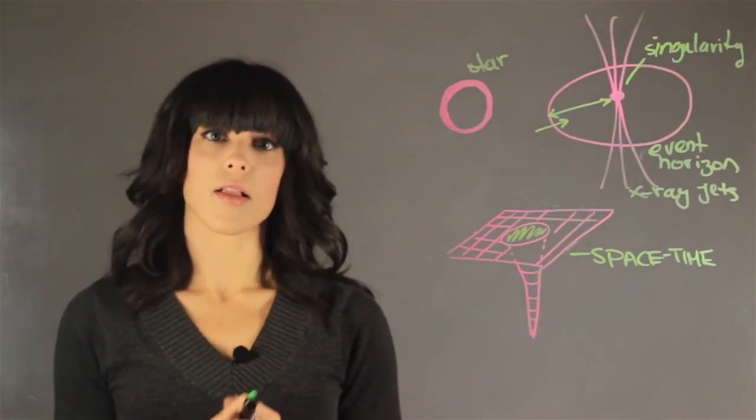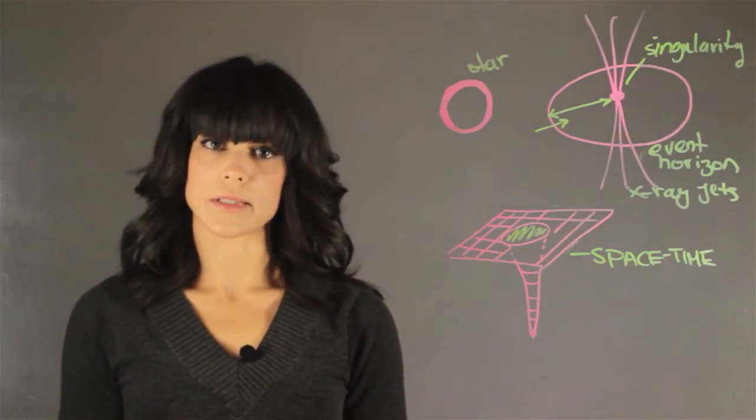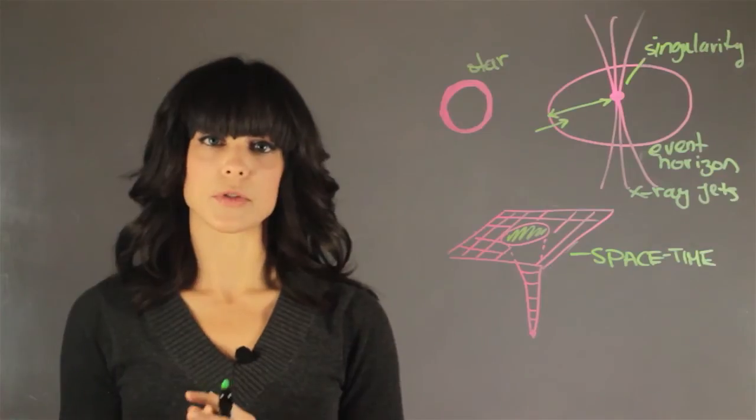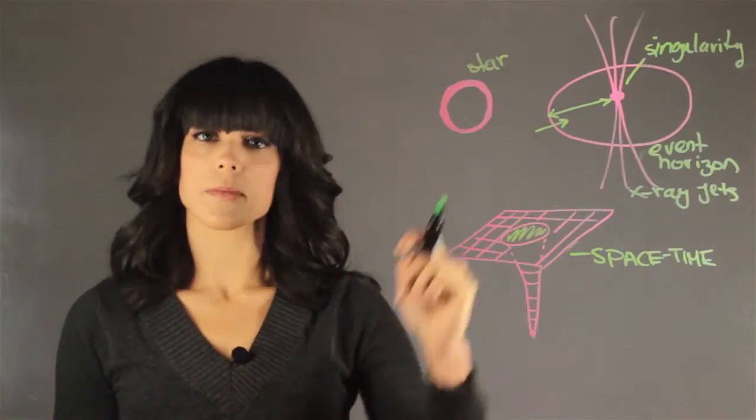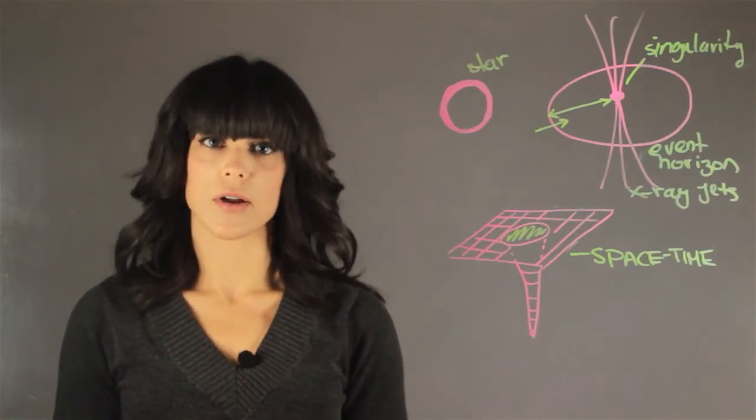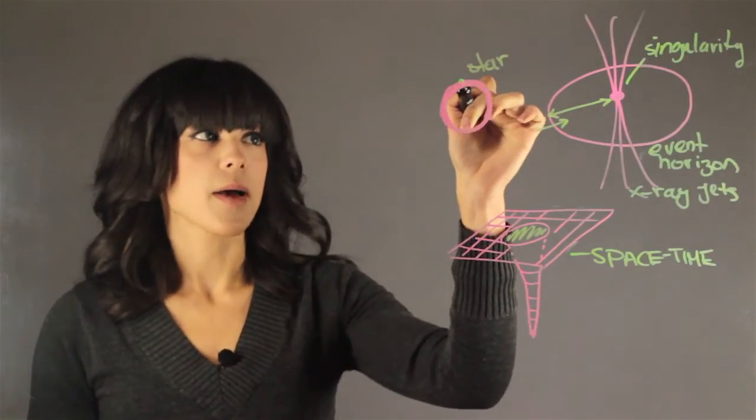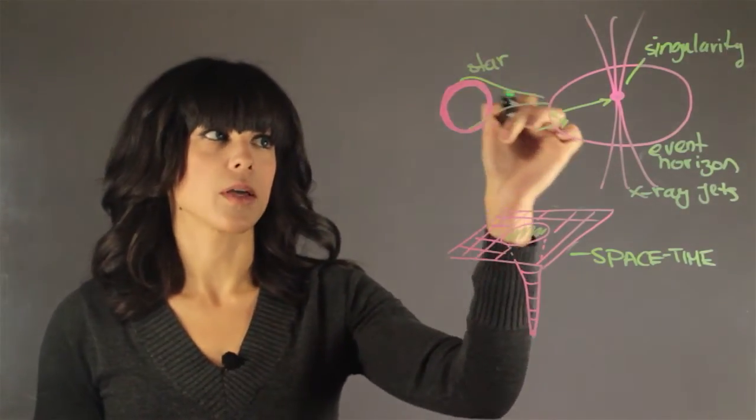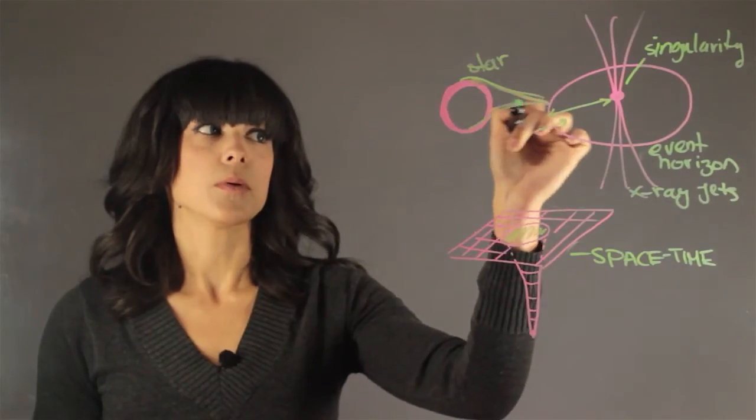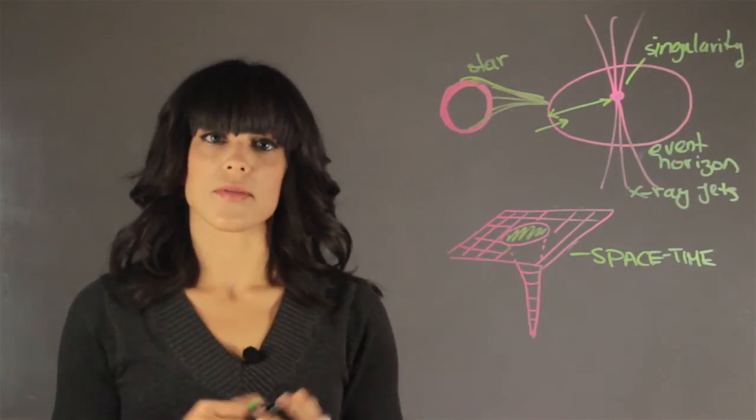Now the other thing is a lot of black holes are formed in binary systems, and a binary system is when you have two stars together. One becomes a black hole, and then you have the other star that is the neighbor star. So a lot of the mass from this star starts being pulled into the black hole as it feels the gravitational pull.